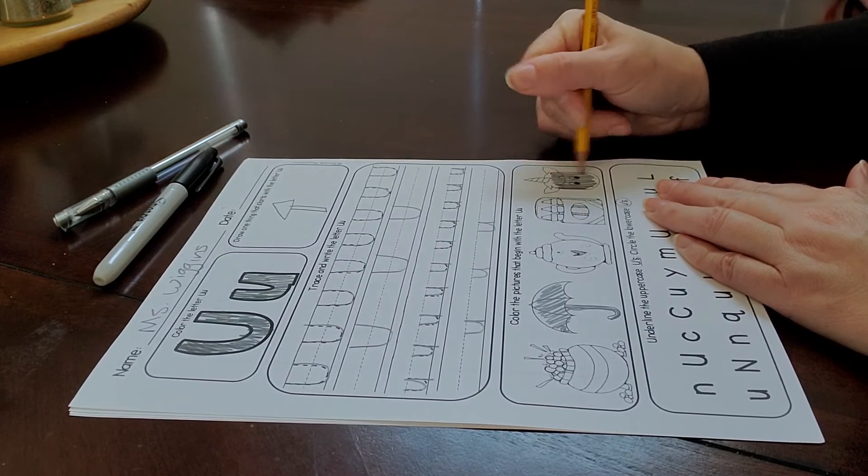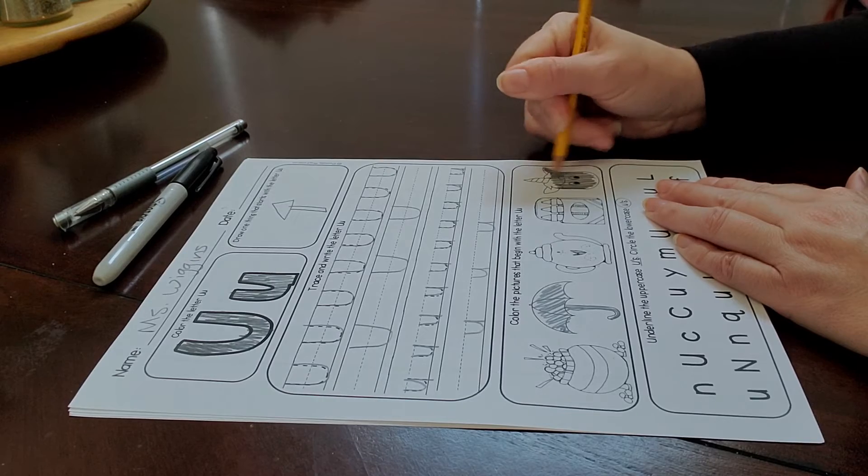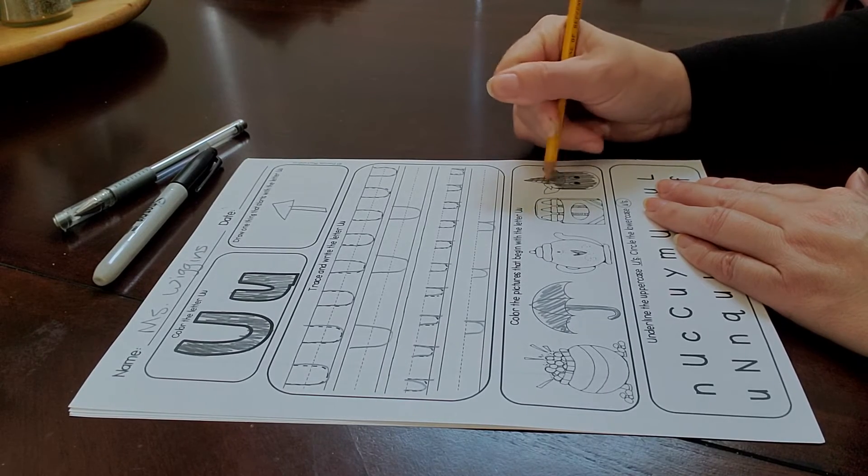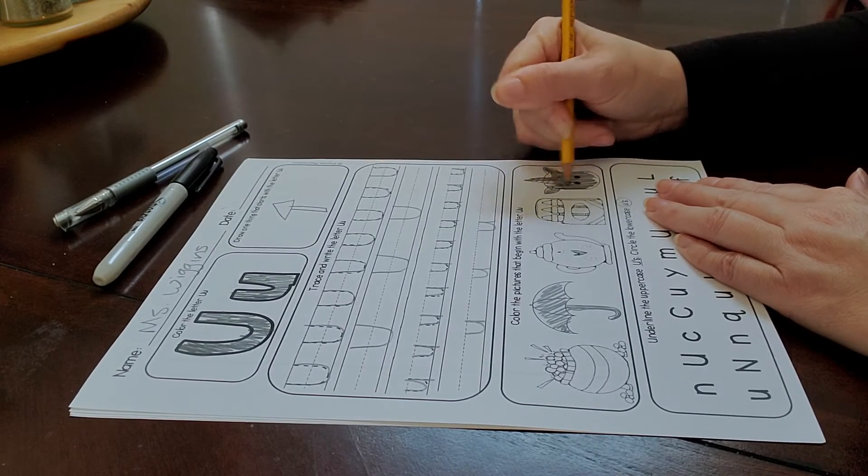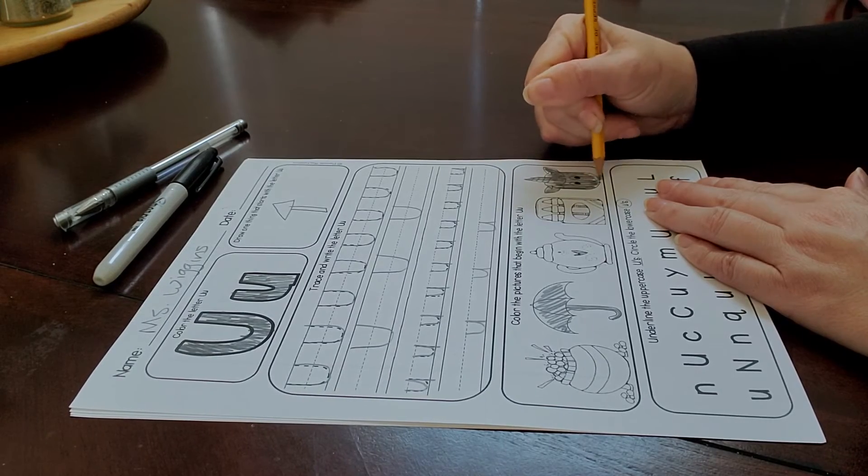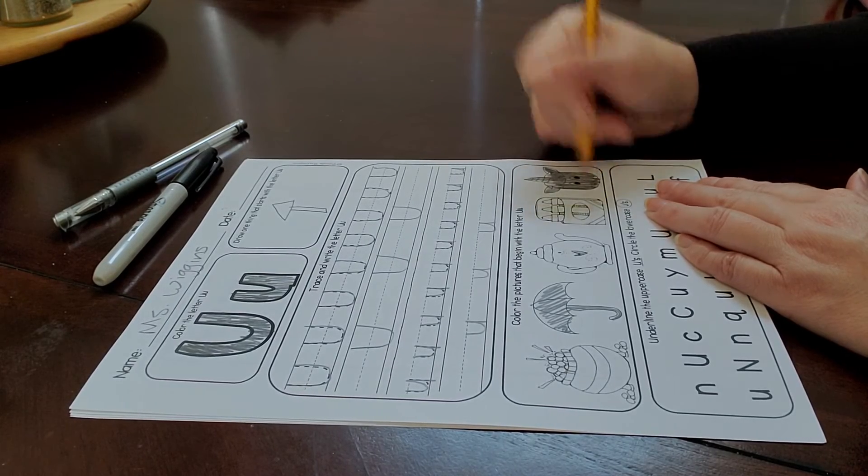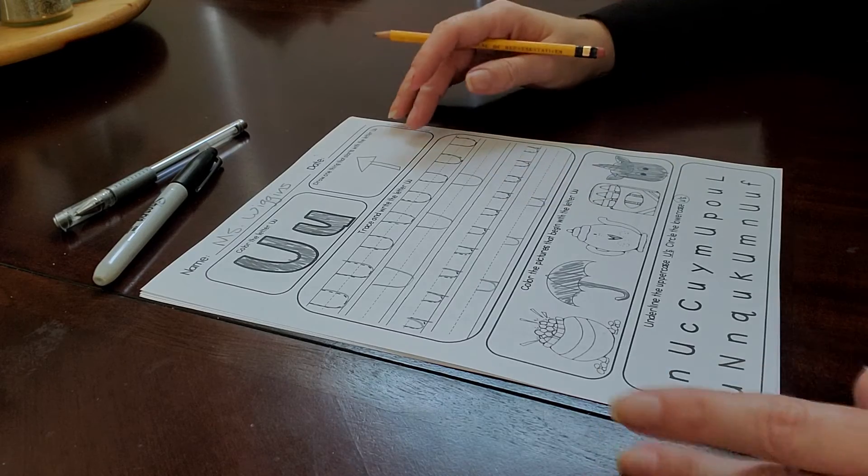Our vowels A, E, I, O, and U actually make two sounds. They are quite tricky. We'll learn that in kindergarten. Maybe at the end of the school year if we have time.